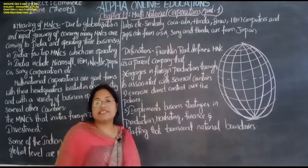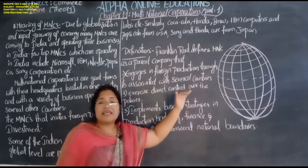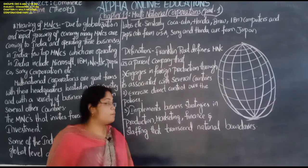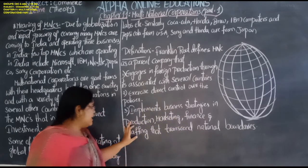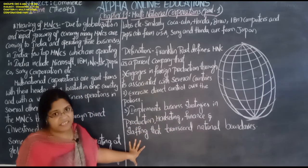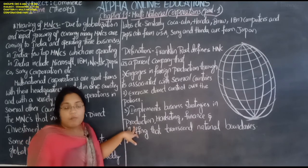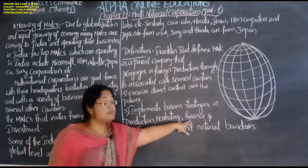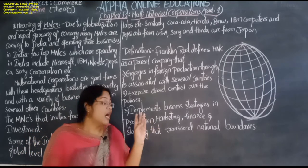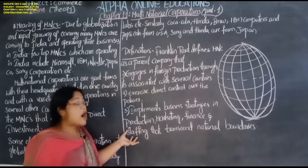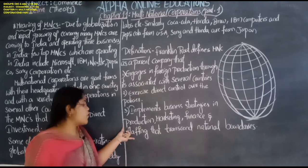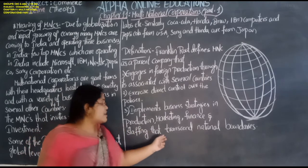MNCs implement a business strategy — that is, a plan — covering production, marketing, finance, and staffing. Production means producing goods; marketing means selling goods; finance means working capital and fixed capital; staffing means employing persons — how many employees, laborers, management staff, chairpersons, board of directors, and managing directors are required. All of these fall under the category of staffing.